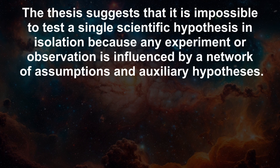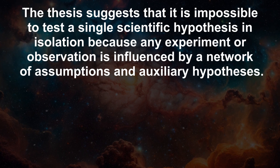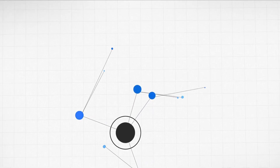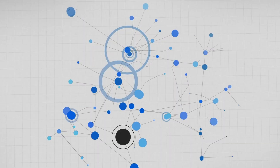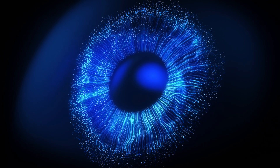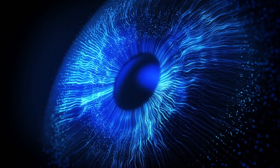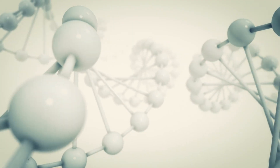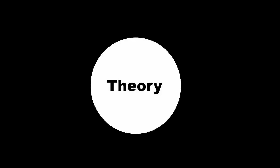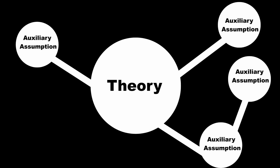The thesis suggests that it is impossible to test a single scientific hypothesis in isolation because any experiment or observation is influenced by a network of assumptions and auxiliary hypotheses. When a hypothesis is tested and produces a result that conflicts with predictions, it is difficult to determine which part of the network of beliefs and assumptions is responsible for the discrepancy. This means it is challenging to pinpoint whether a particular hypothesis or auxiliary assumption is false based solely on the empirical evidence. Keep this in mind when we return to apply this to the debate about God's existence.